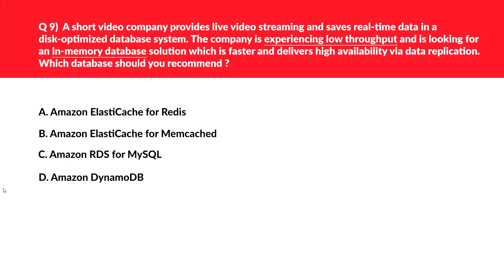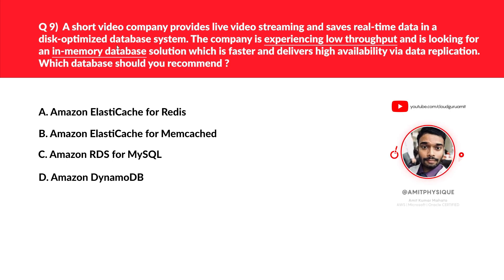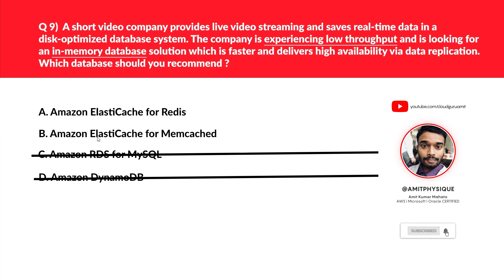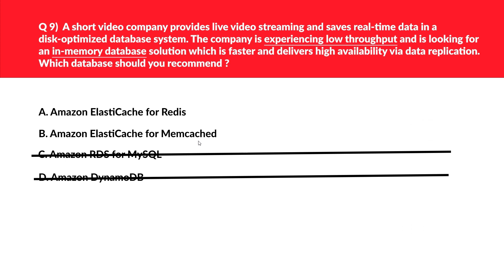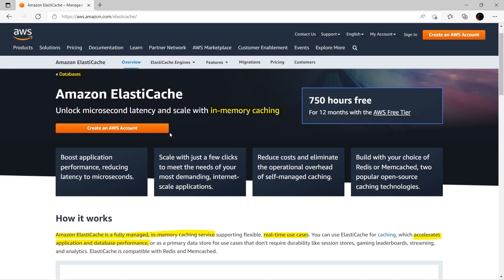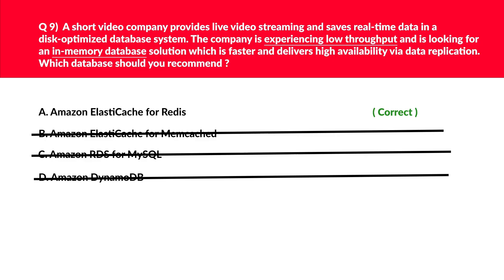This question resembles a real-life scenario. Options C and D — Amazon RDS for MySQL and Amazon DynamoDB — are not in-memory databases, but the question requires an in-memory database, so both are out. Option B is ElastiCache for Memcached. Redis lets us create multiple replicas of a Redis primary, allowing us to scale database reads and achieve highly available clusters, which Memcached doesn't offer, making option B incorrect. ElastiCache is a fully managed in-memory caching service used for real-time cases that accelerates application and database performance. Hence option A is the correct answer.